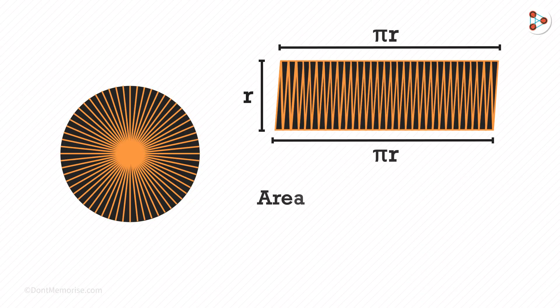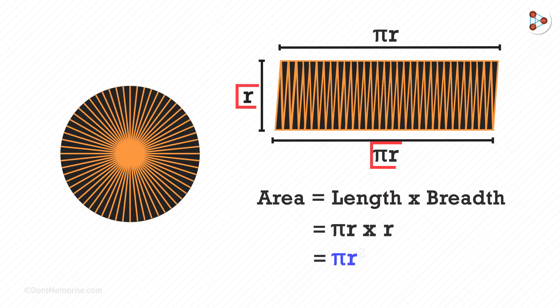And the area of the rectangle is its length multiplied by its breadth. So multiplying these two, we get pi r multiplied by r which is pi r squared.